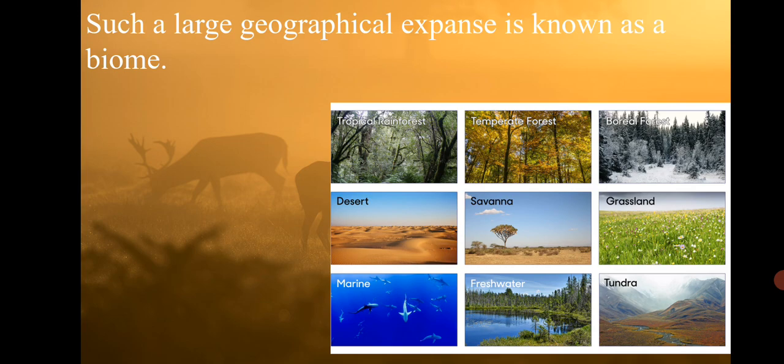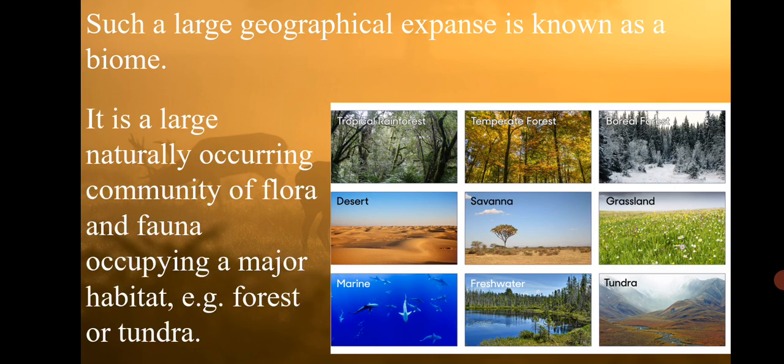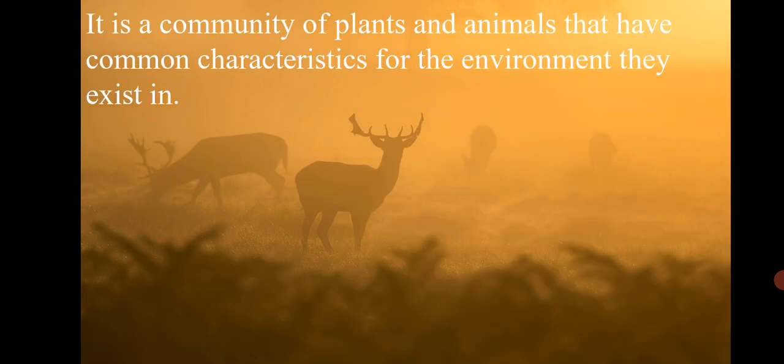Such a large geographical expanse is called a biome. It is a very large region of the earth where environmental conditions are particular, and the organisms that develop there are also particular. It's a large, naturally occurring community of flora and fauna occupying a major habitat. For example, tropical rainforest, temperate forest, and tundra are examples of biomes.